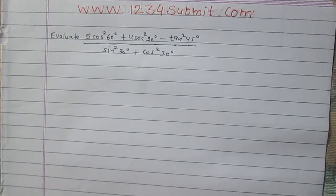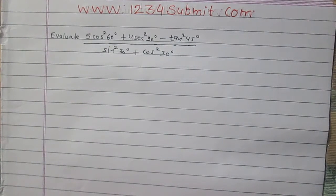Evaluate 5 cos square 60 degree plus 4 sec square 30 degree minus tan square 45 degree, whole divided by the sum of sine square 30 degree and cos square 30 degree.